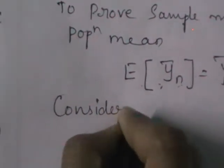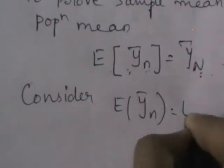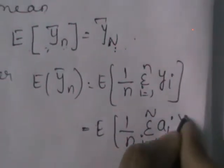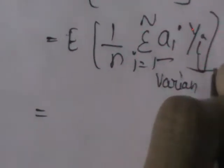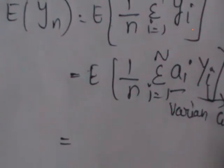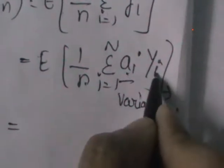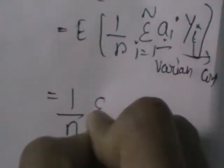Let us consider the LHS, which is nothing but E(ȳ_n). The formula for ȳ_n has two definitions; we are going to use the second one. So the same can be written as 1 by n, sigma i equals 1 to capital N, a_i y_i. Now a_i is the variable and y_i is a constant. You know that E(cx) equals c times E(x). Similarly here, as a_i is the variable and n and y_i are constants, so you can take out the constants from the expectation.